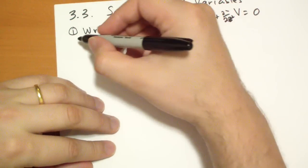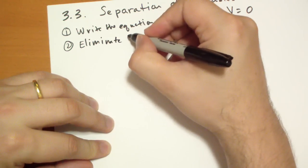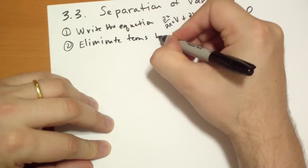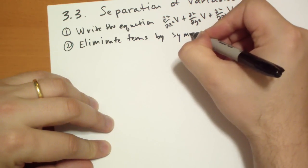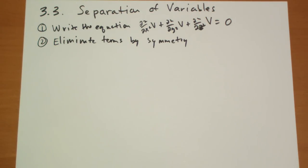The second step is you try to eliminate some of the terms by symmetry. What do I mean by that? Well, if your problem has no dependence on z in the boundary conditions that you're going to have,